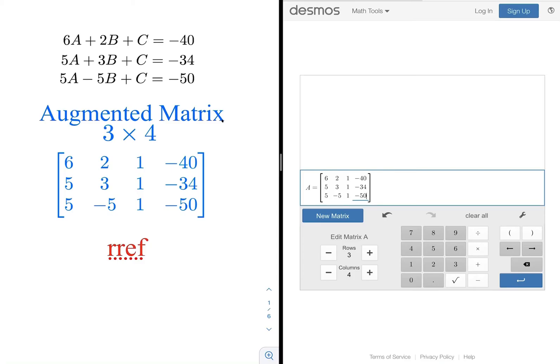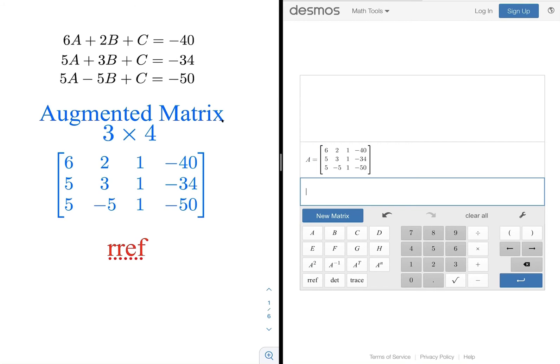You've entered your matrix and you're happy with it, just tap enter. We're going to take our augmented matrix and have the calculator put it in reduced row echelon form. So we're going to tap RREF and then we're going to enter matrix A which is the matrix that we just entered.